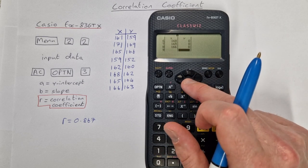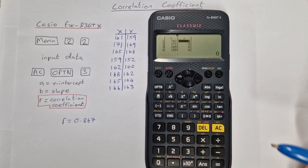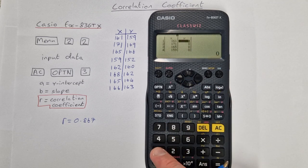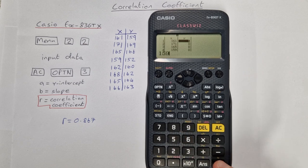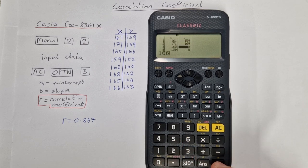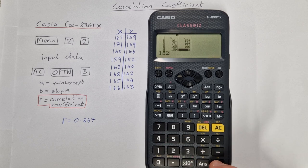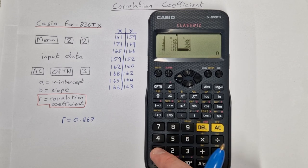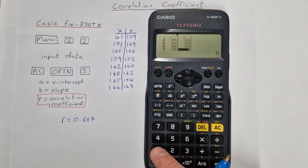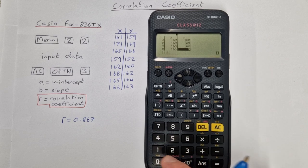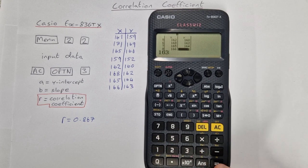Then we'll use our arrows to go across and back to the top of the y column, inputting all of them: 159 equals, 169 equals, 166 equals, 152 equals, 160 equals, 162 equals, 164 equals, and 163 equals.